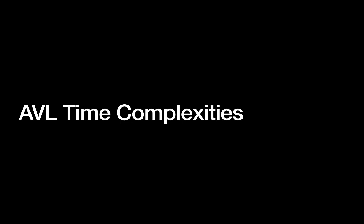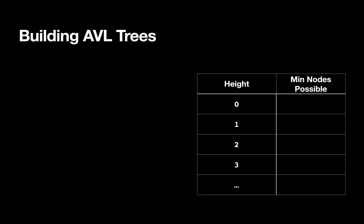Now that we can maintain the AVL tree, let's talk a little bit about the time complexities. So first off, let's think about the basic process of building a tree, and as part of our argument here, we'll think about the minimum number of nodes we could have in an AVL tree — specifically the minimum number of nodes for each individual height.